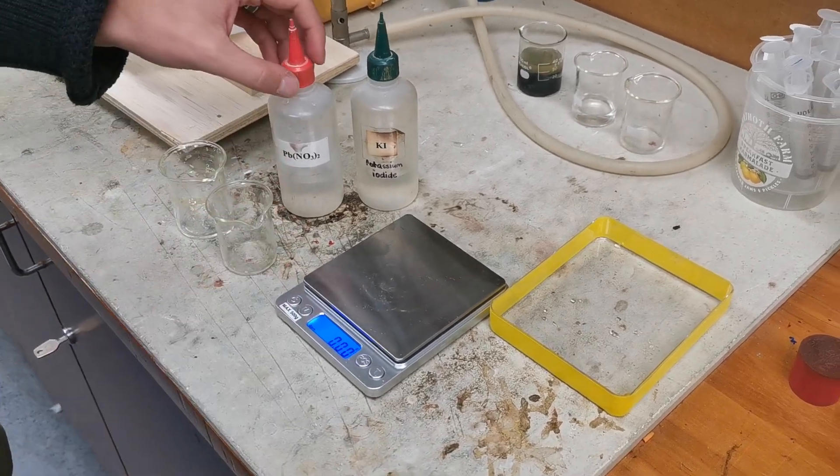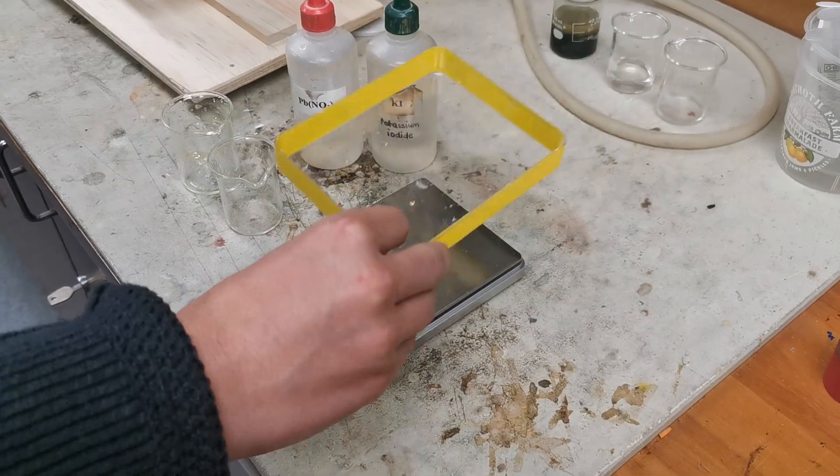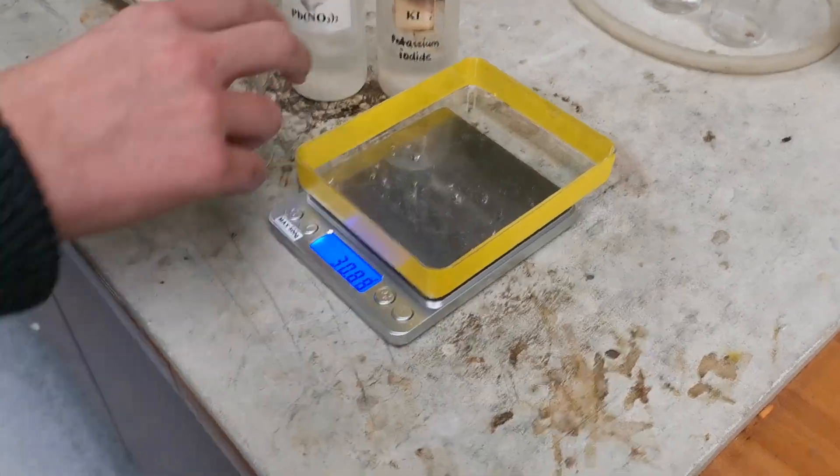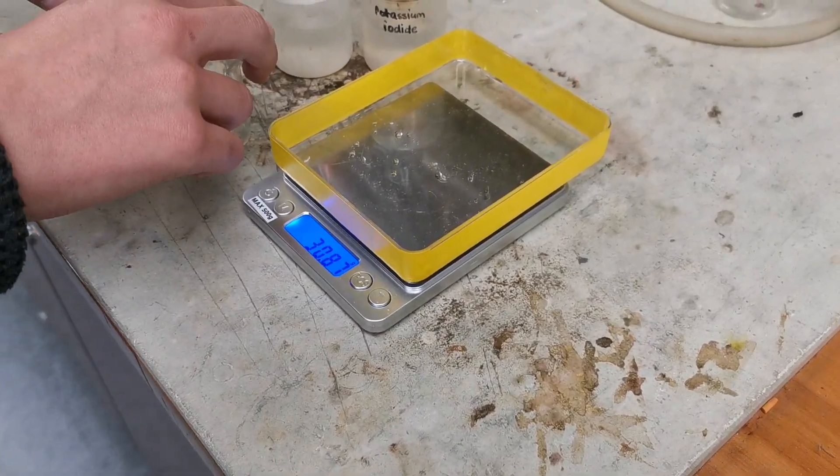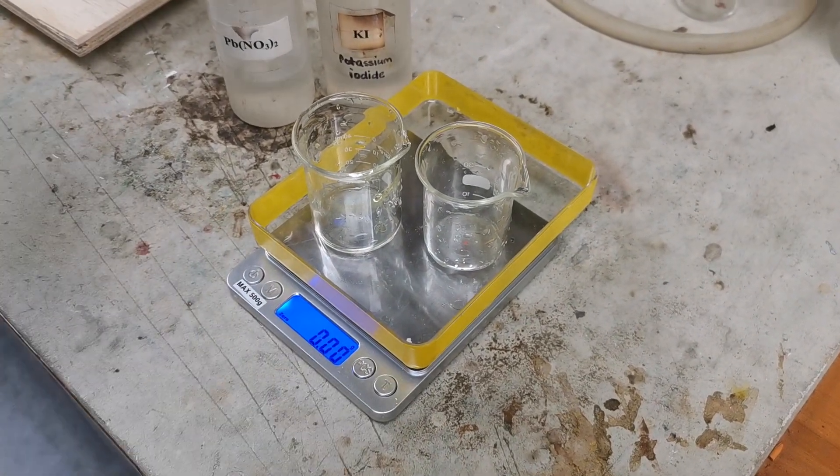So a quick experiment to show conservation of mass using a precipitation. We've taken the base off a set of scales and we've got two 50ml beakers which we'll put on and then we'll tare it to zero.